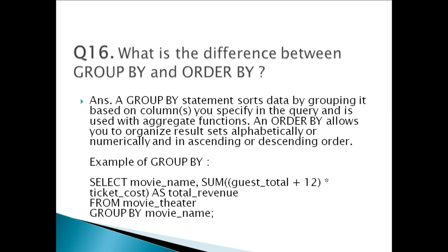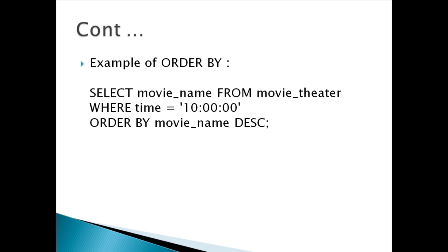This GROUP BY query will fetch the total revenue and total number of guests along with 12 extra guests for each different movie present in the table. The ORDER BY example query will fetch all movie names for a particular time specified in descending order, so movie names starting with Z will be at the top and those starting with A at the bottom. Please remember the default ORDER BY is ascending.